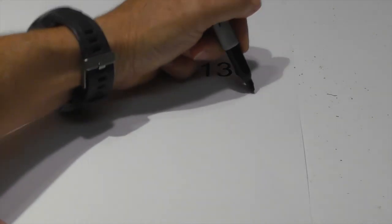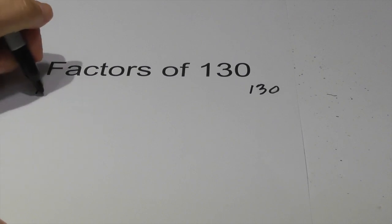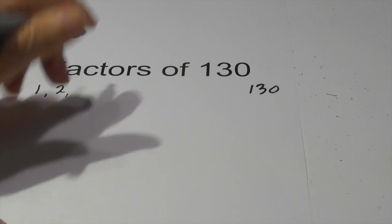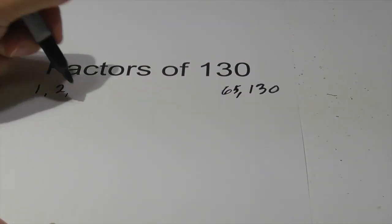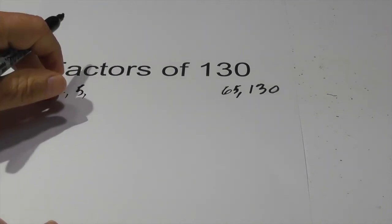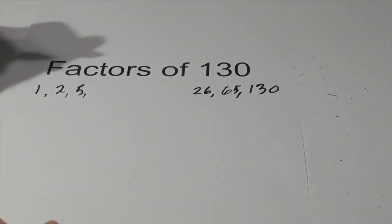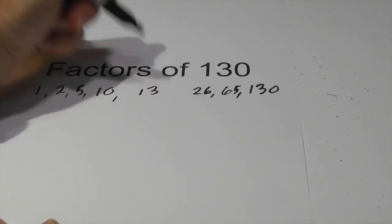So we have 1 and 130 is a composite number. So 1 times 130, 2 goes into 130 because it ends in a 0 and that is 2 times 65 and then 5 goes into 130 and it goes in 26 times and then 10 goes into 130, 13 times.